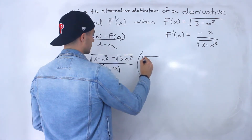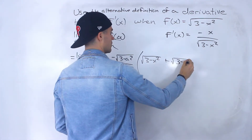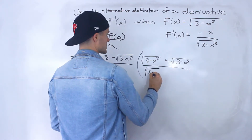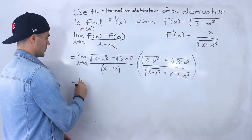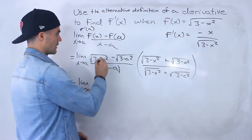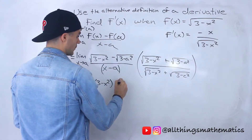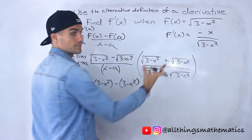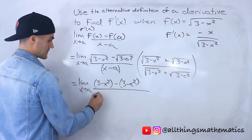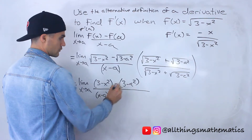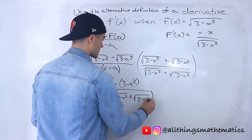To do that, we rationalize — we multiply by the conjugate: square root of 3 minus x squared plus square root of 3 minus a squared, all over square root of 3 minus x squared plus square root of 3 minus a squared. What we'll end up with in the numerator is 3 minus x squared, then minus the quantity 3 minus a squared. Make sure you put a bracket there. The denominator stays as x minus a times that conjugate expression.